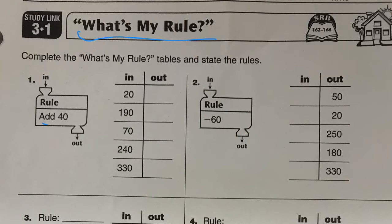It says add 40, and we have these in and out values, so basically we add 40 to the in to get the out. So 20 plus 40 gives us 60, 190 plus 40 gives us 230, and so on.